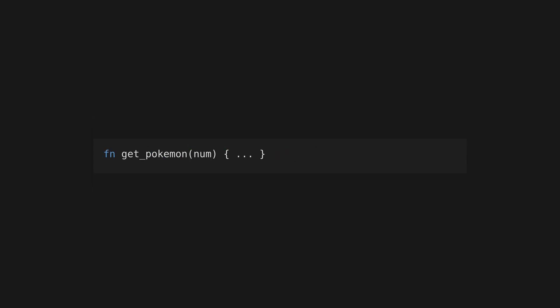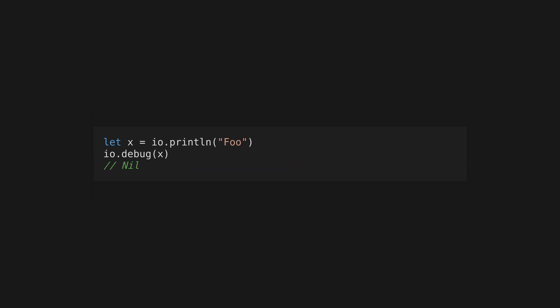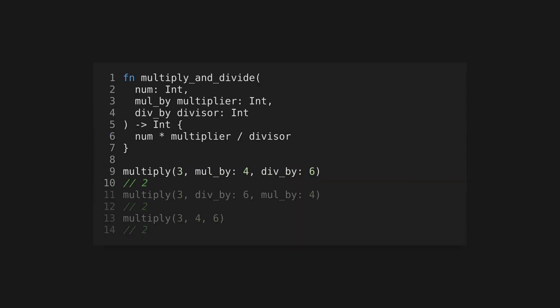Define a function using the fn keyword followed by the function name. Parameter type annotations are optional, as is the return type annotation, which is defined using an arrow. Functions can contain multiple statements, but there's no return keyword in Gleam so you can't exit early. Instead, a function will return the value of the last expression in its body. If there's no defined return value, the function will return nil.